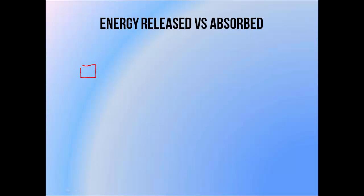Let's first make a distinction between energy released and energy absorbed. If a 2 MeV photon enters this little square of water, undergoes a Compton interaction, and leaves with 1 MeV, we say it has lost 1 MeV in this mass of water. The Kerma, or kinetic energy released per unit mass, is 1 MeV. In a Compton interaction, this energy is given to an electron.